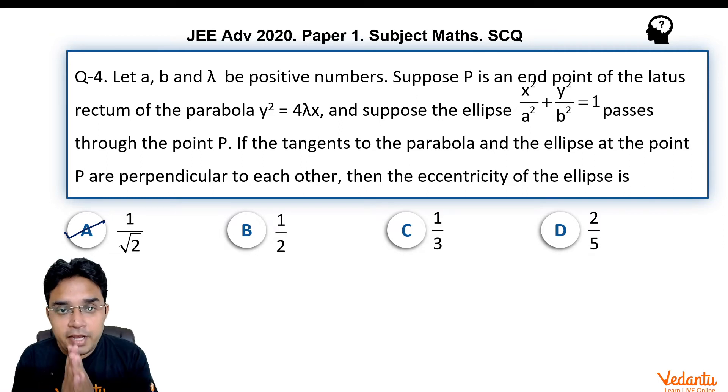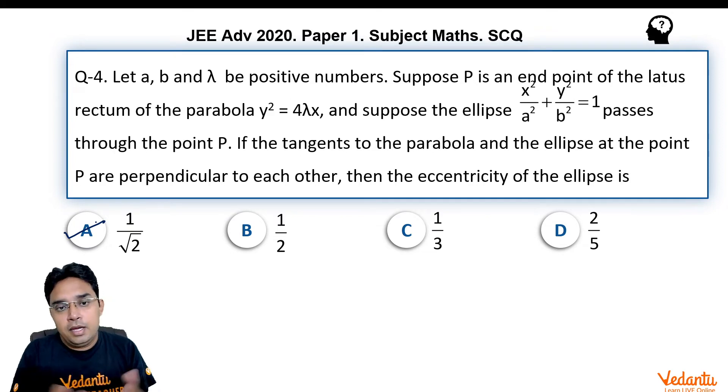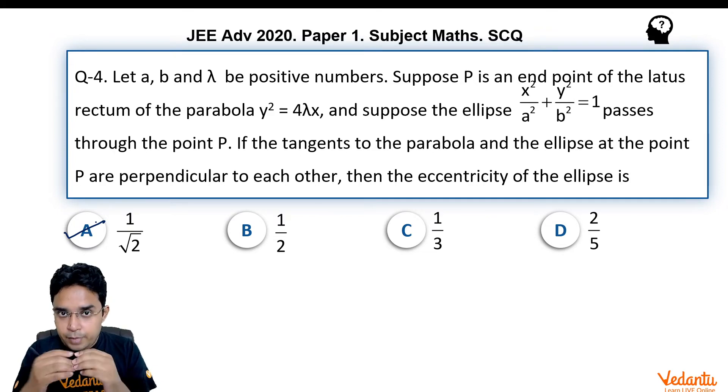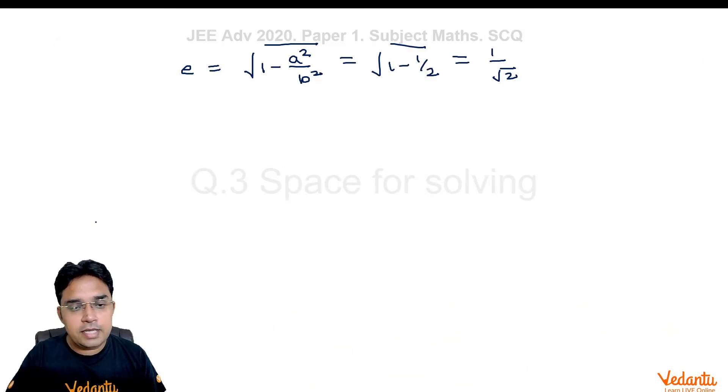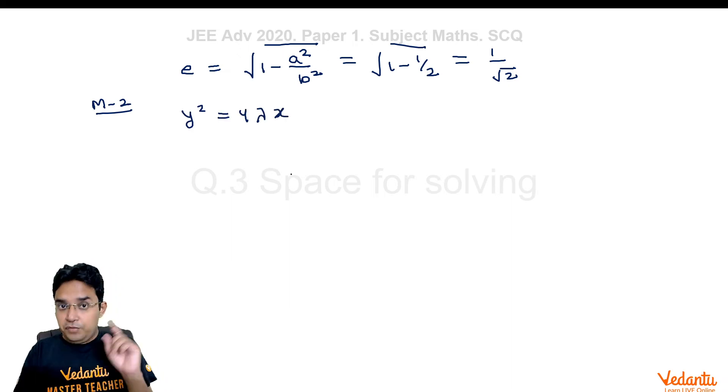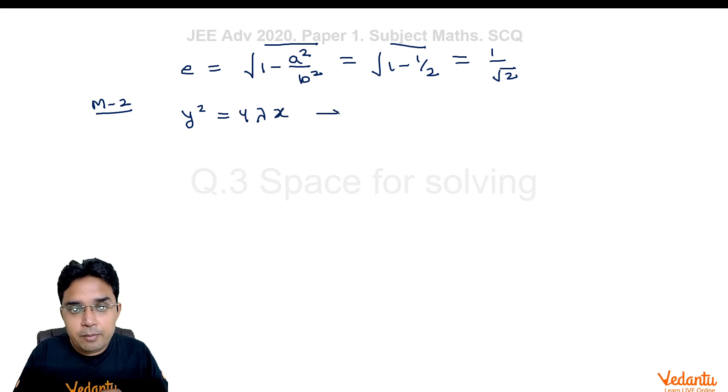Now, I will tell you one very important thing about this question. In fact, I will tell you how this question would have appeared in JEE Advanced, the paper makers what motivation would have been there while they were making this question and you can call this as method 2 also. Everyone please see.